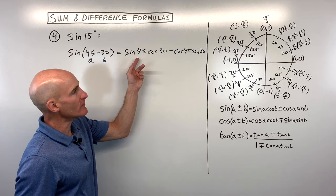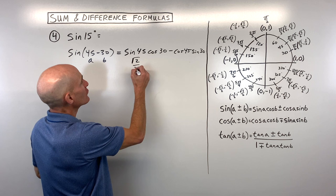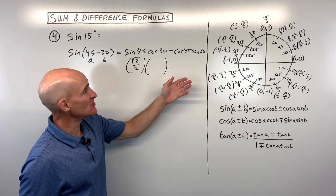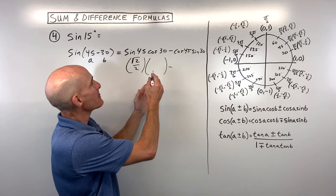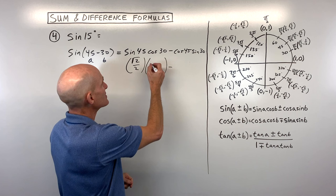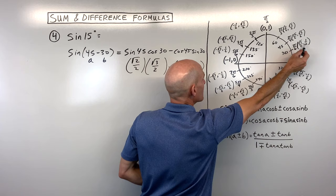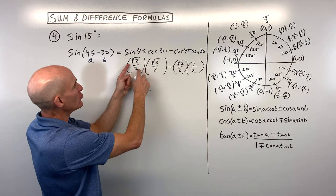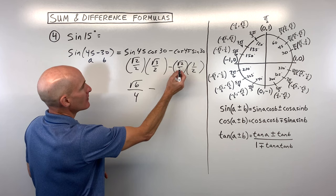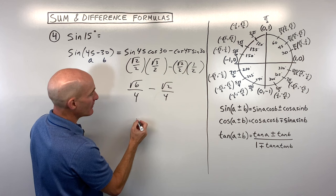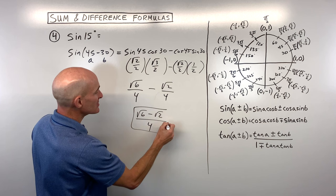What's sine of 45? That's our y-coordinate on the unit circle: √2/2. Cosine of 30 is the x-coordinate: √3/2. Cosine of 45 is the x-coordinate: √2/2. And sine of 30 is the y-coordinate: 1/2. Multiplying numerators: √6 over 4, minus √2 over 4. Common denominator of 4, so we get (√6 − √2) / 4 — the exact value for the sine of 15 degrees.